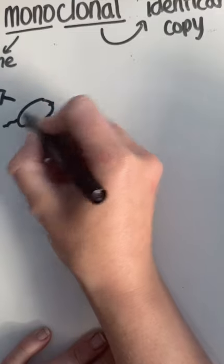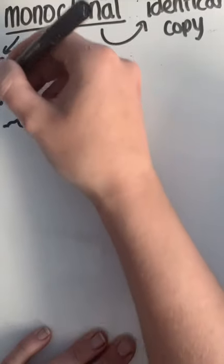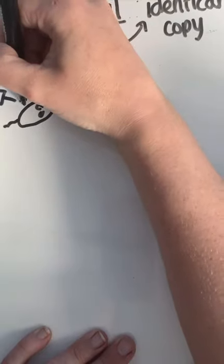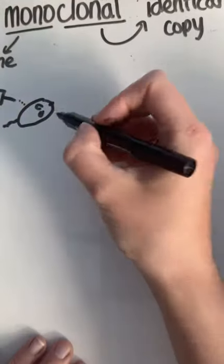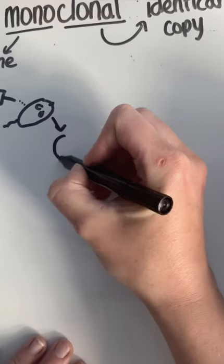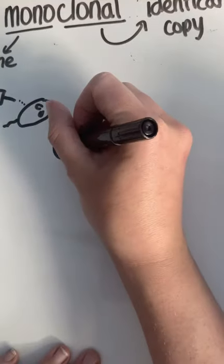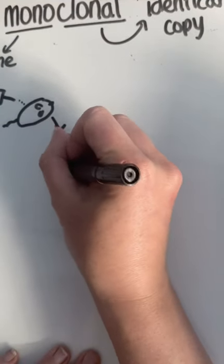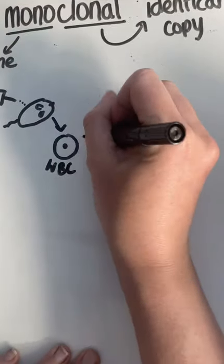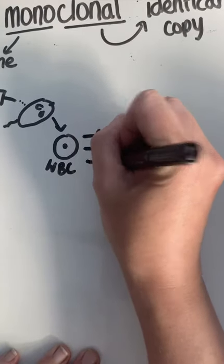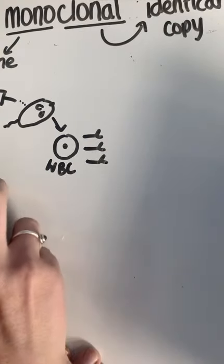So we have the mouse here, and the antigen is being injected into it. Inside the mouse — just as it would be in us — the mouse has lymphocytes, which are a type of white blood cell that produces antibodies.